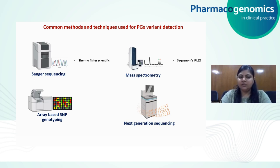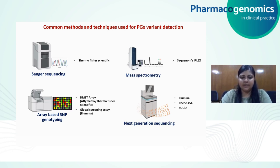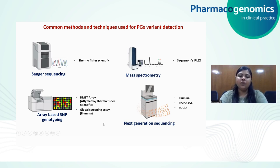Here are certain proprietary names with which these techniques are available. In the case of array-based SNP genotyping, there are two different groups. There is the DMET array by Affymetrix, which is specific to pharmacogenomic genes — probes for only those genes are present on that chip. However, for the Global Screening Array by Illumina, whole genome-based probes are present.